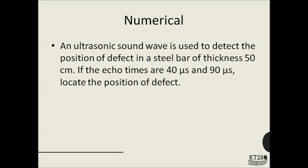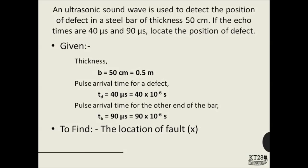Now let's look at the first numerical. Pause the video and try it yourself. When ready, here is the answer. We are given the thickness of the steel bar, the pulse arrival time for a defect, and the pulse arrival time for the other end of the bar. The velocity of ultrasound is not given but can be calculated using the pulse arrival time from the other end and the bar thickness. Using that velocity and the defect pulse arrival time, we can find the fault location.